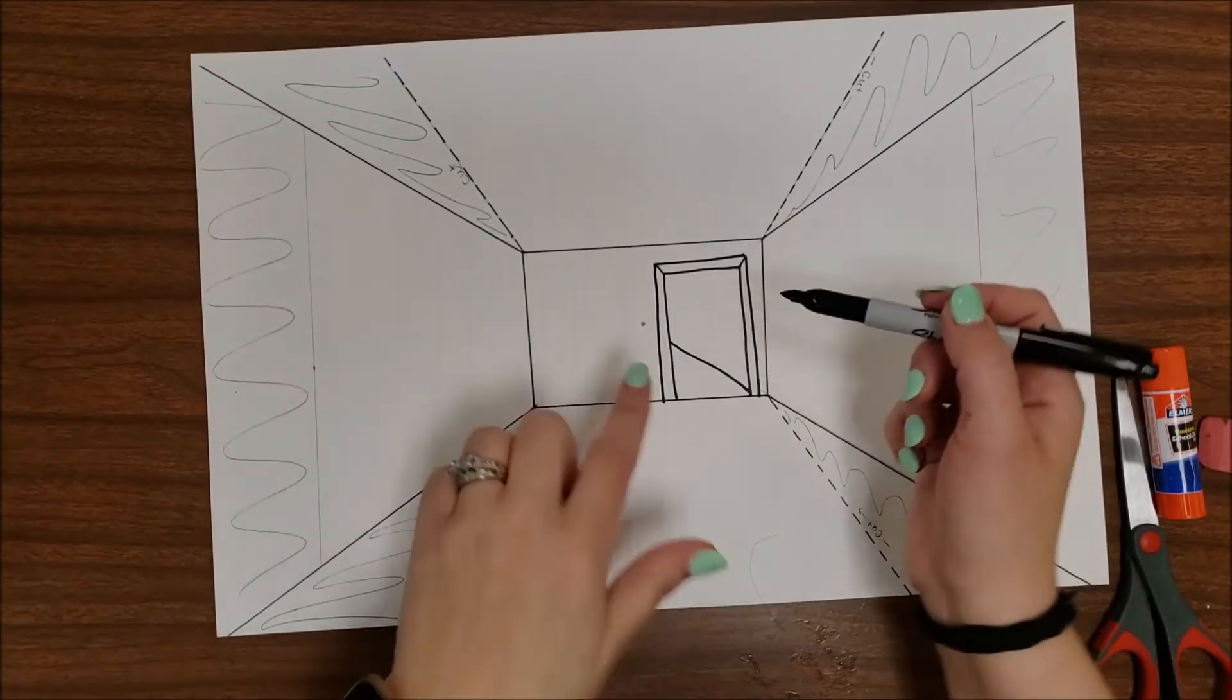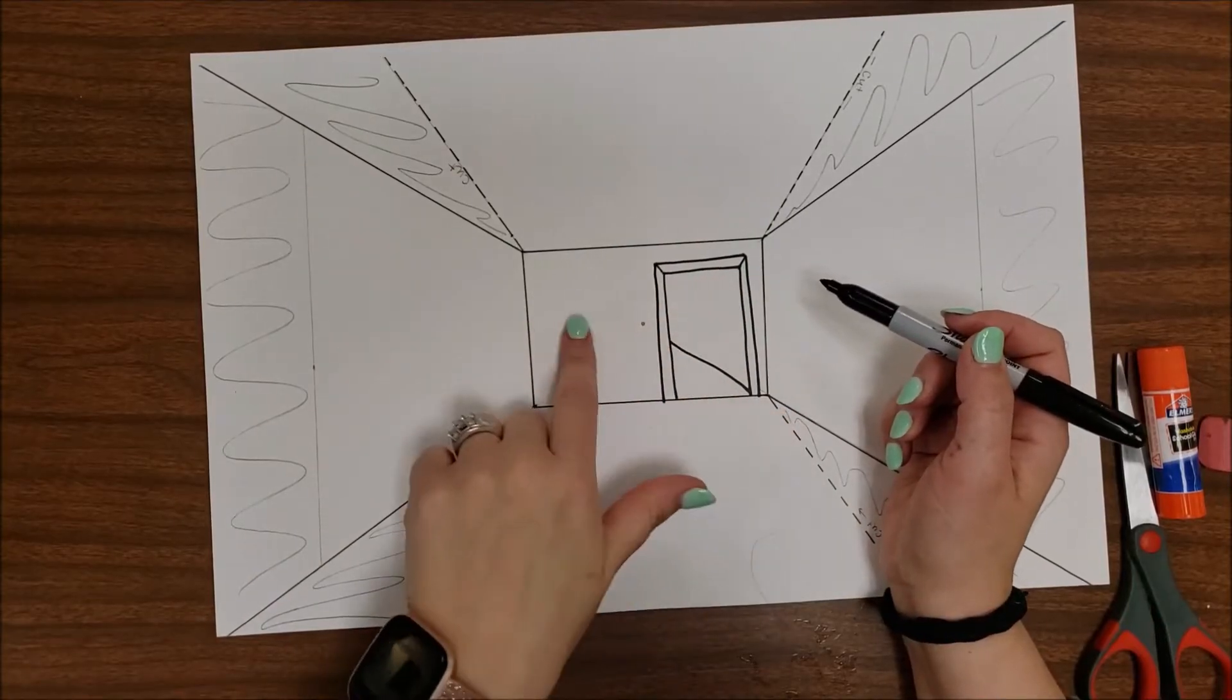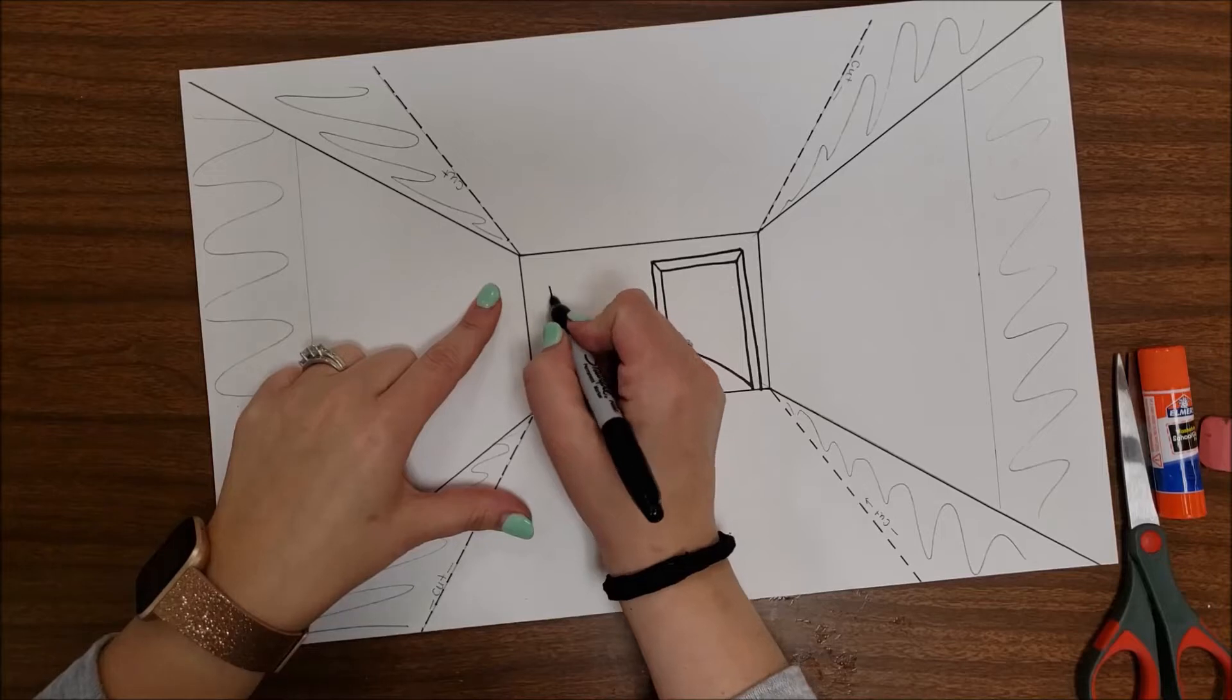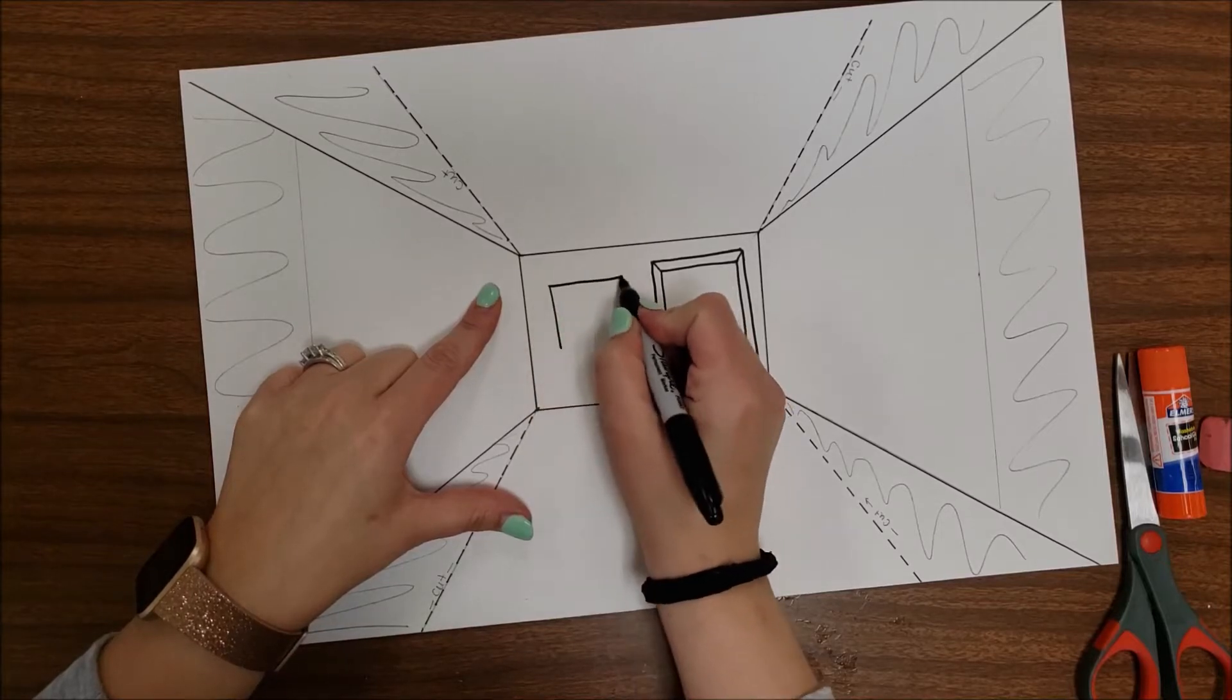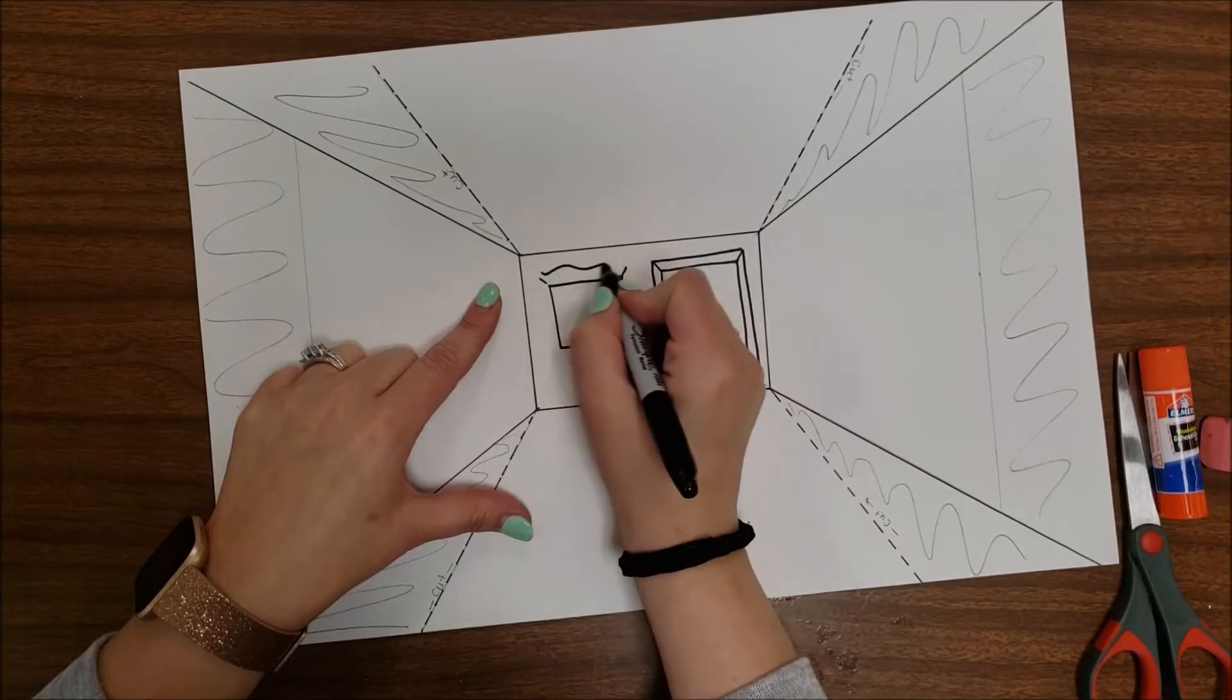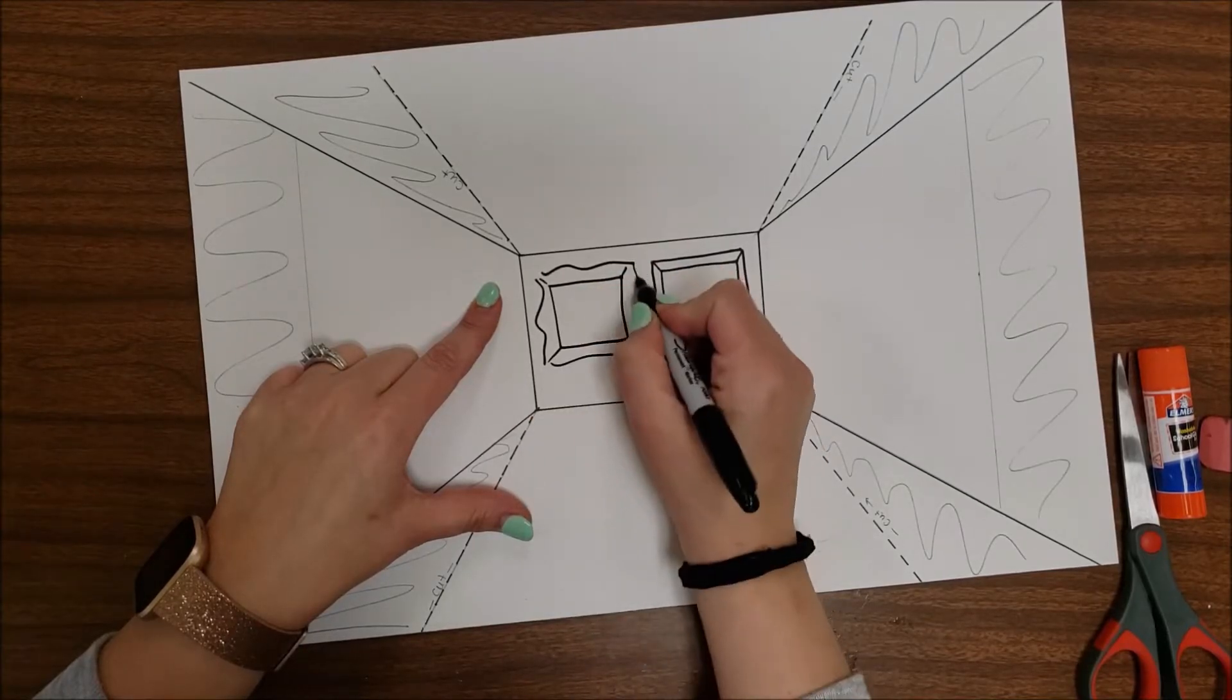In the back wall, anything you draw can be drawn as you would draw things normally. So if you draw windows, doors, or picture frames, those are all going to appear normal in your regular square and rectangle shapes.